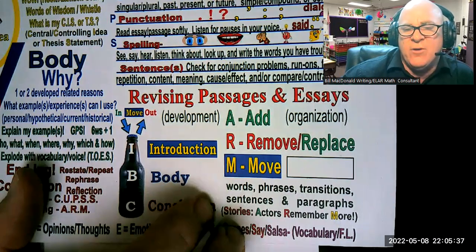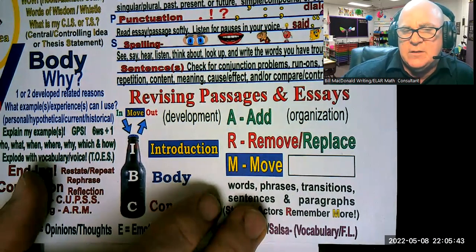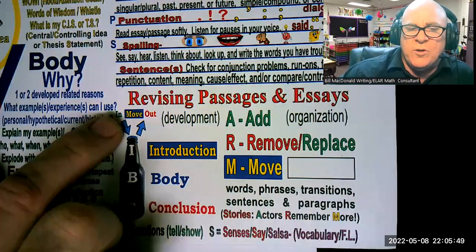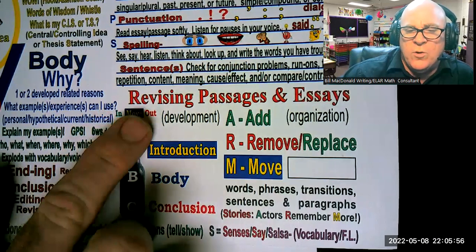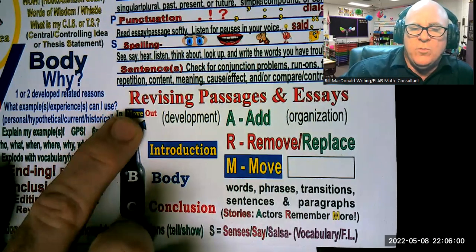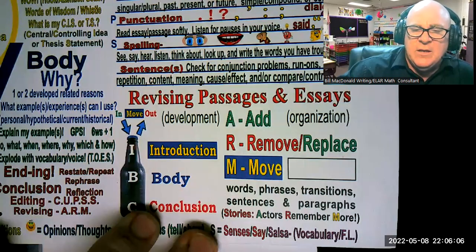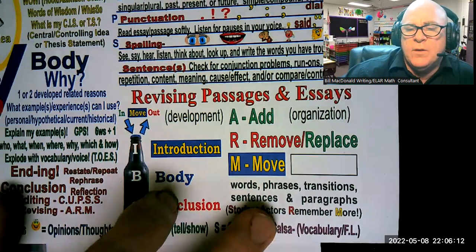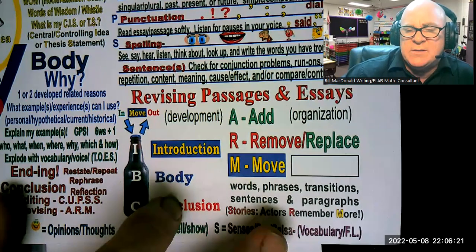That's the most they're ever going to ask your kids to fix the content of — just one sentence. In the introduction, the body, or the conclusion, you're going to put something in, take something out, or move the order around. Another way to do ARM, if it happens to be a story that your kids are revising, is for them to remember the acronym 'actors remember more' — you could add the S for story sequence, or 'artists remember more pictures,' remember more setting or senses.